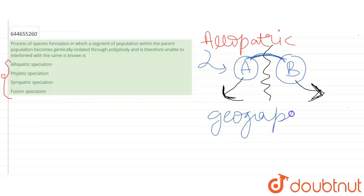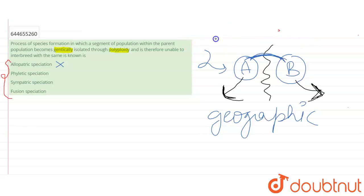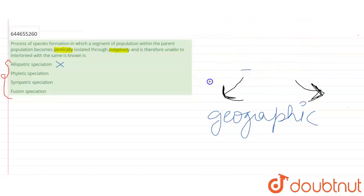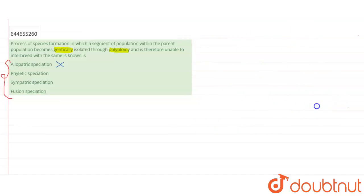Allopatric speciation is not the correct answer because we are looking for genetic or biological barriers like polyploidy, not geographical barriers. So allopatric speciation is not our answer. The second form of speciation given in the options is phyletic speciation.